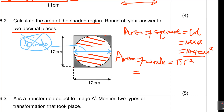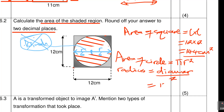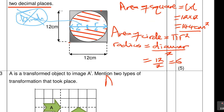The full distance across the circle is 12 — that is the diameter, d. The radius is half the diameter. So radius = diameter ÷ 2 = 12 ÷ 2 = 6. So the radius r = 6. Now we can find the area of the circle: A = π × 6².